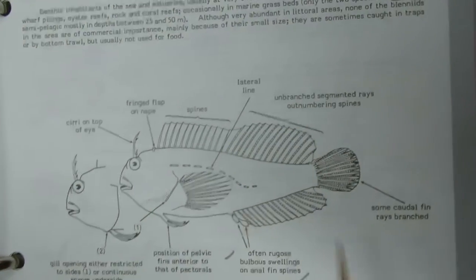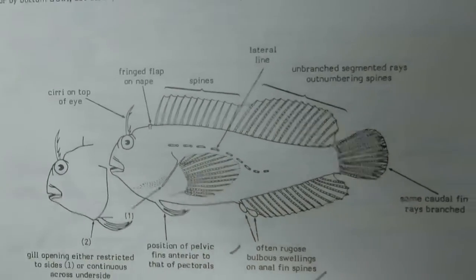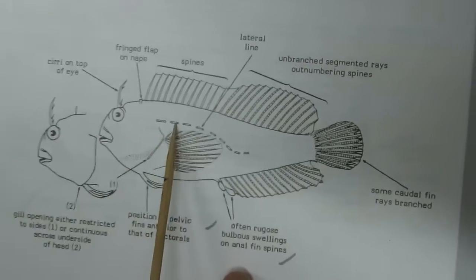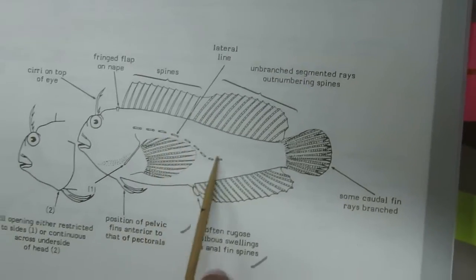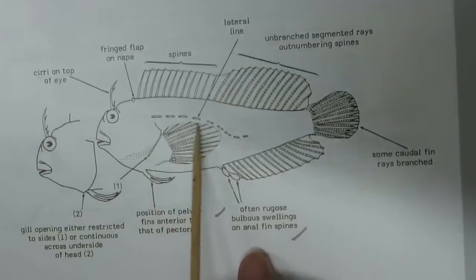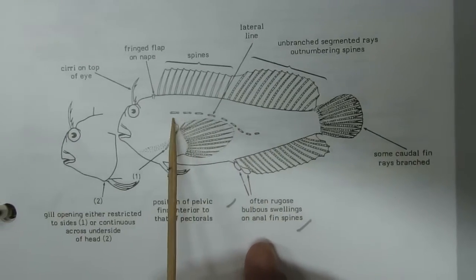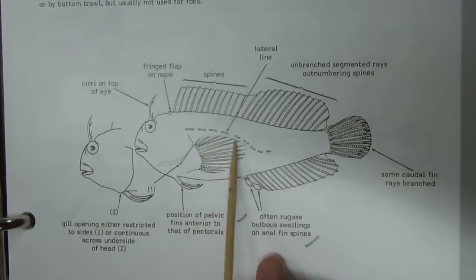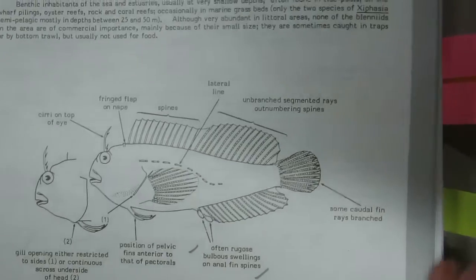Next is Blenniidae. The lateral line tubules or canals are present along the entire length of the body, or only anteriorly on the body, with some transverse branches. Here you can find small transverse branch-like structures.